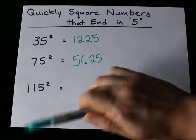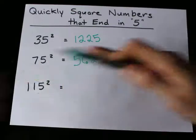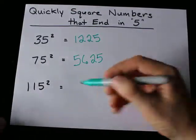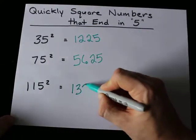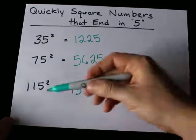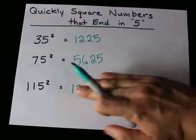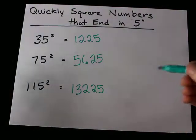115 squared, it works no matter how many digits you have. Chop off the 5, you get 11. 11 times 12 is 132. Do you remember your times tables? Because it'll be helpful if you're actually trying to do this kind of thing. And it's 13,225, because I just add 25 to the end. That's it.